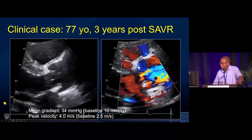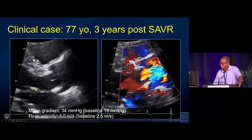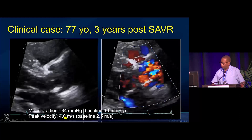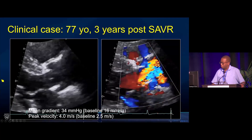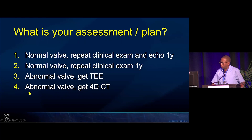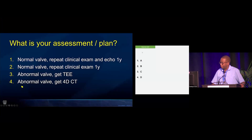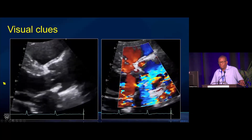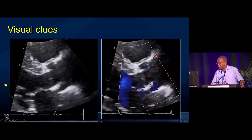If I tell you that the mean gradient right now is 34 millimeters of mercury, and the baseline mean gradient following interval prosthesis placement was 16 millimeters of mercury, and the peak velocity is 4 meters per second, up from a baseline of 2.5 meters per second — how would you vote now? There was a little bit more uptake when we added the Doppler hemodynamics on top of the visual inspection of the valve.